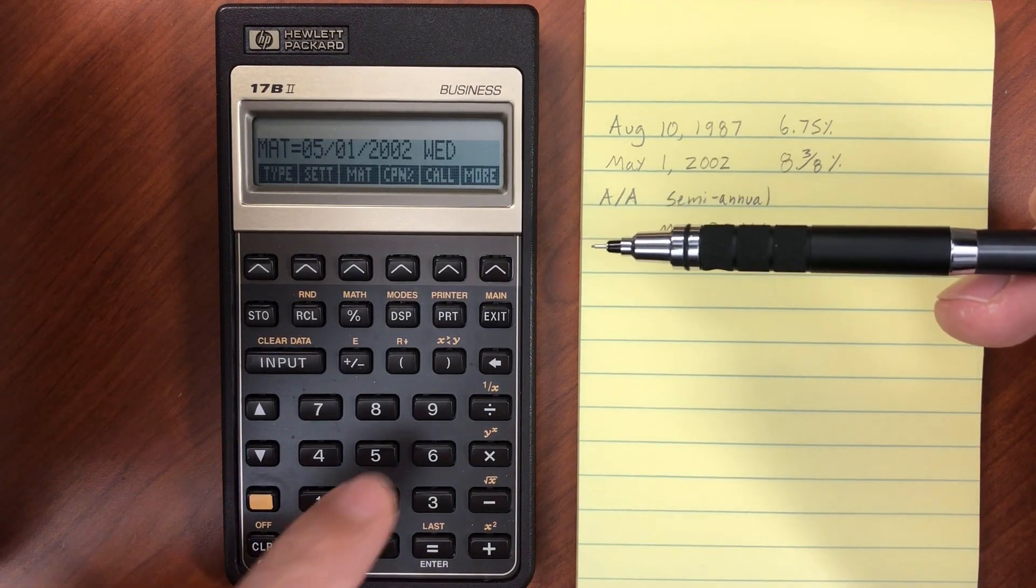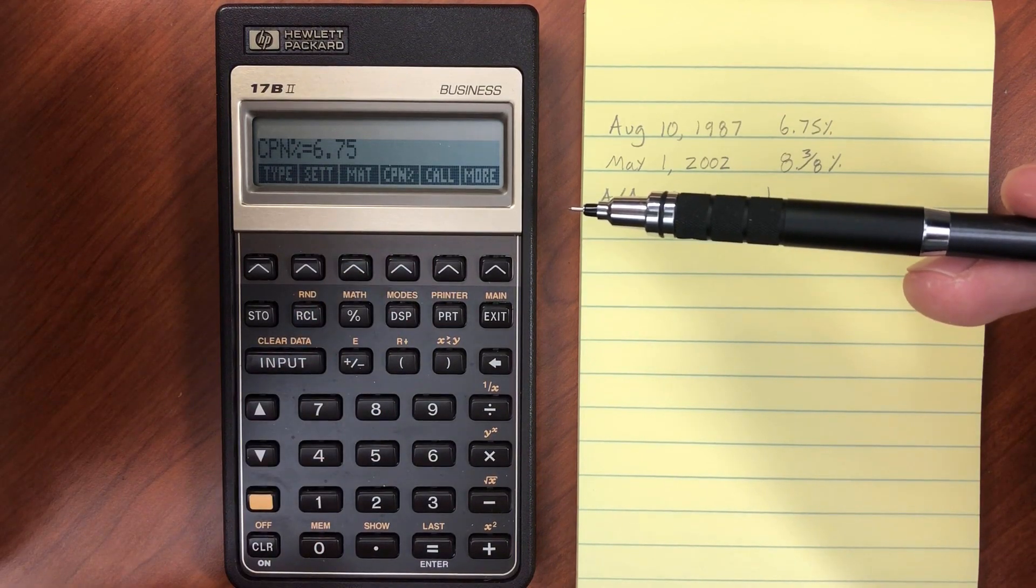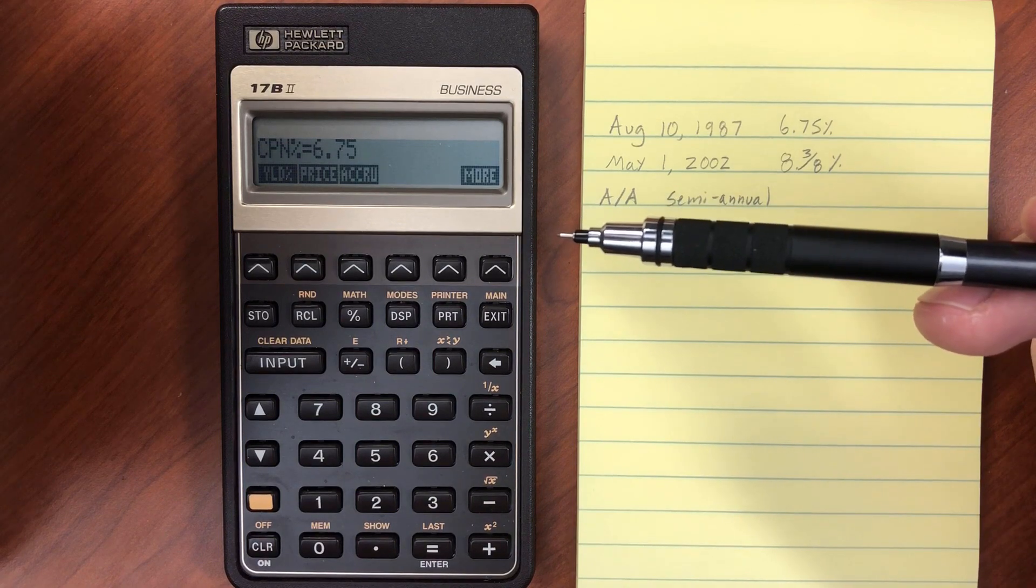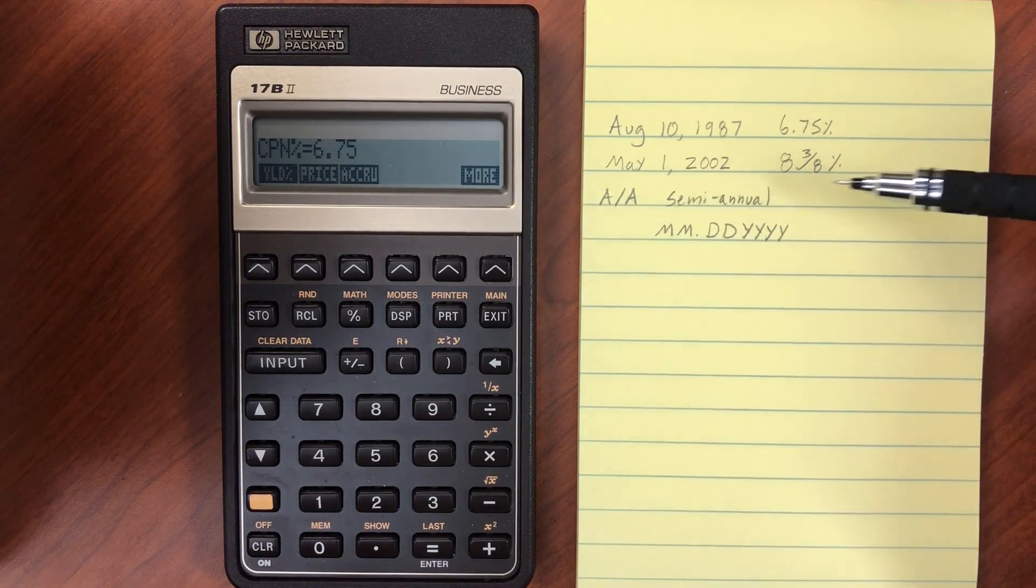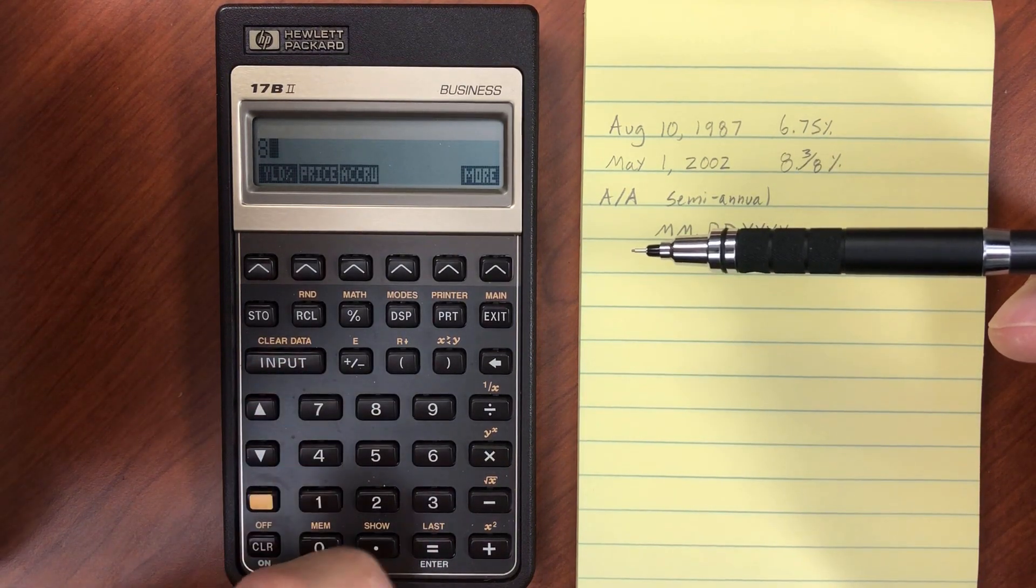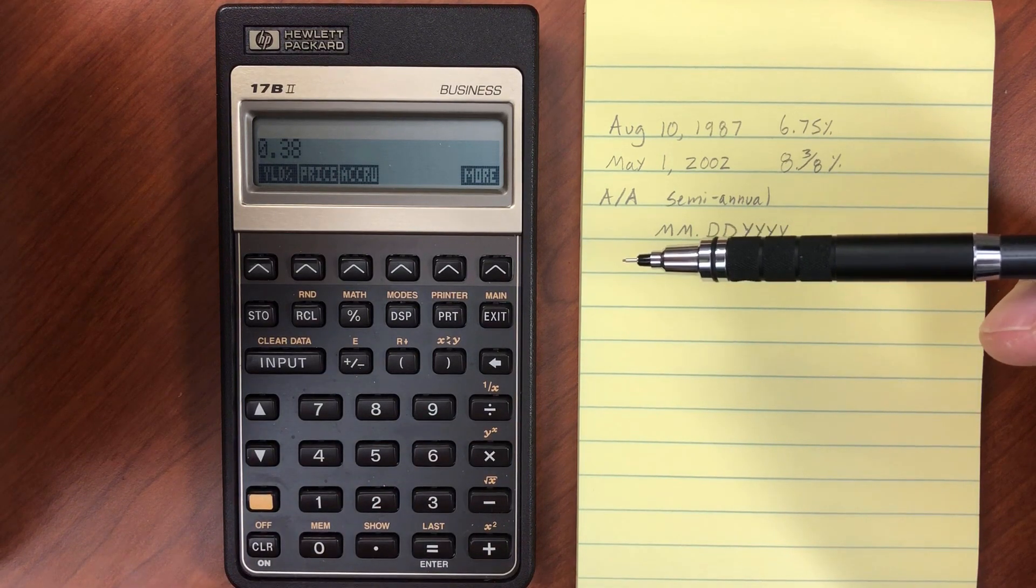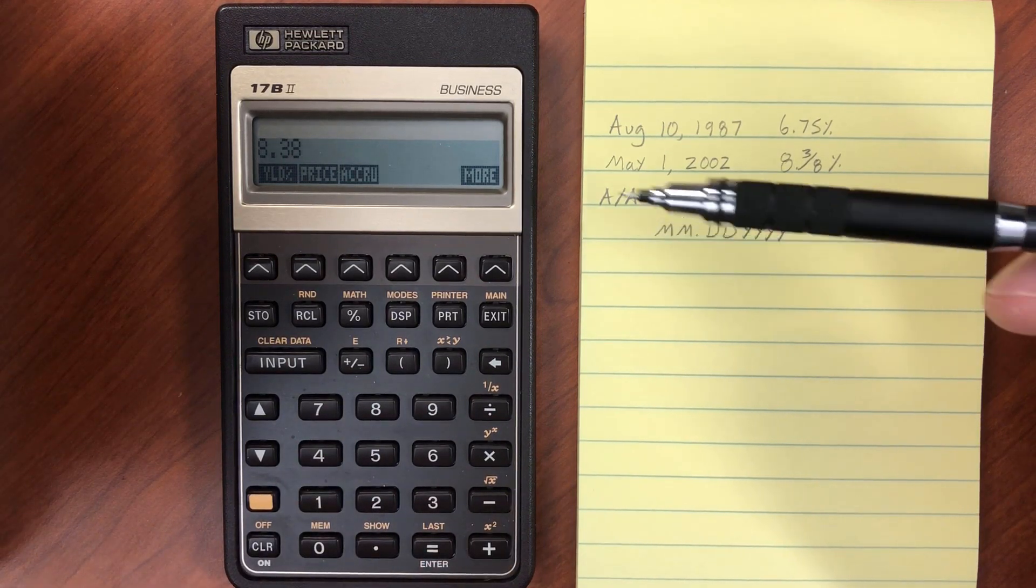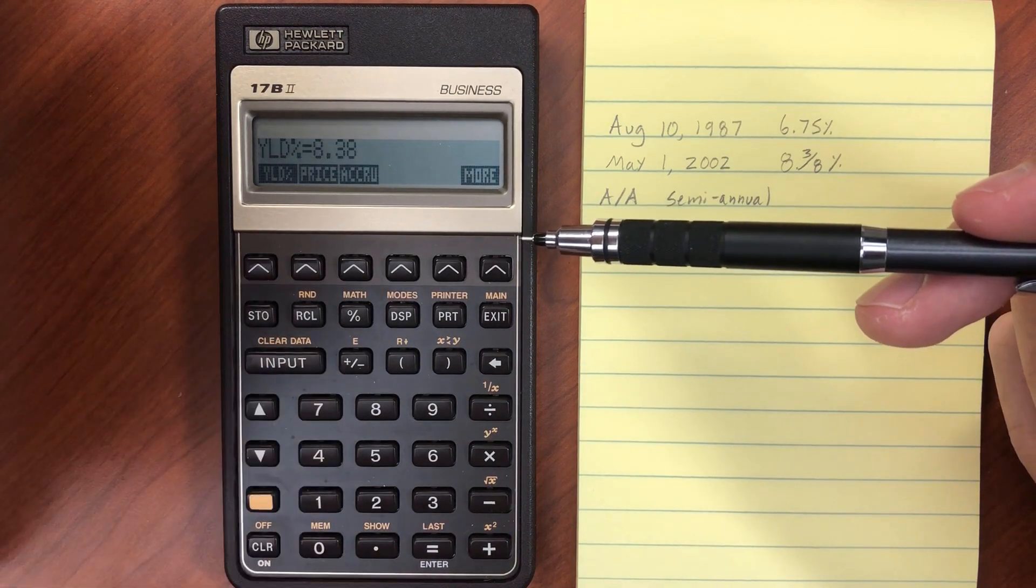The coupon rate is 6.75%. Let's go to the More menu. The yield is going to be 8 and 3/8. Let's enter 3 divided by 8 plus 8, which is 8.3, and that's going to be our yield.